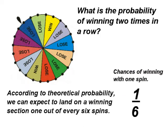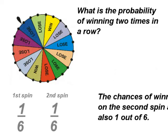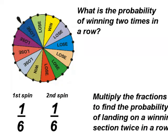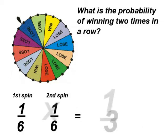To find the probability of landing on a winning section two times in a row, we take the fraction one sixth of the first spin and the probability of landing on a winning section on the second spin which is also one out of every six spins and multiply those probabilities together to get a product of one out of every thirty-six spins.